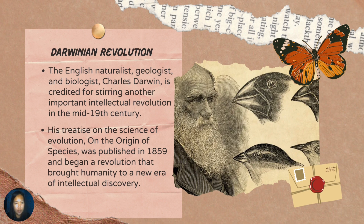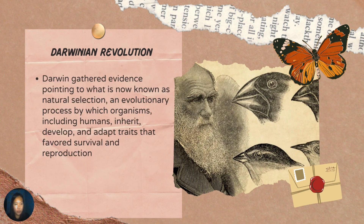Next is the Darwinian Revolution. The English naturalist, geologist, and biologist Charles Darwin is credited for steering another important intellectual revolution in the mid-19th century. His treatise on the science of evolution and the origin of species was published in 1859 and began a revolution that brought humanity to a new era of intellectual discovery. The Darwinian Revolution benefited from earlier intellectual revolutions, especially those in the 16th and 17th century, such that it was guided by confidence in human reason's ability to explain phenomena in the universe. Darwin gathered evidence pointing to what is known as natural selection, an evolutionary process by which organisms, including humans, inherit, develop, and adapt traits that favored survival and reproduction.